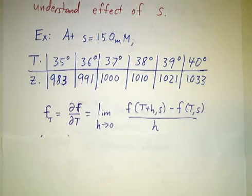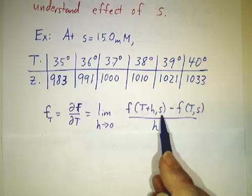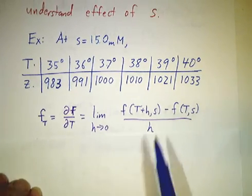Now we call it a partial derivative because we're only taking a derivative with respect to one of the variables. We're not getting any information about what happens when you change s. But the formula here is the same as before.